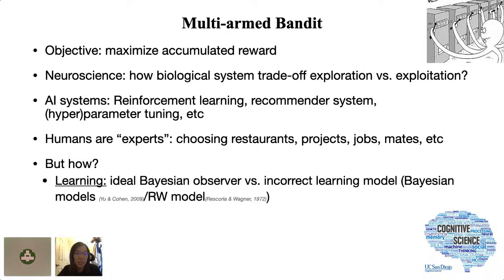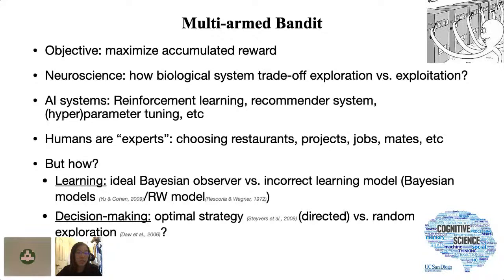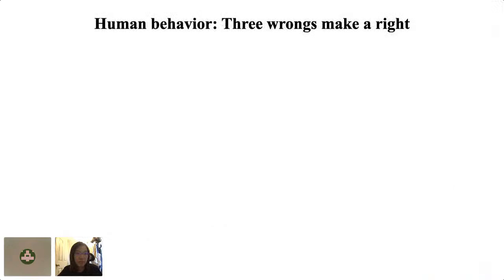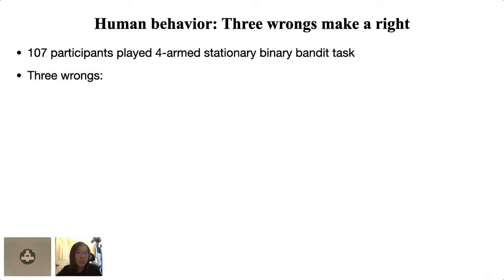Is human learning in bandit tasks better captured by an ideal Bayesian observer or an incorrect learning model that assumes the reward rate to be changing? Is their decision making consistent with the optimal strategy, and do they have irrational beliefs about the reward environment? We recruited 107 undergraduates to perform stationary bandit tasks where the reward rate does not change across trials, and outcomes are binary — either they earn a reward or not. We found three 'wrongs': humans overestimate environmental volatility, as a model assuming non-stationarity explains human data better than other models.